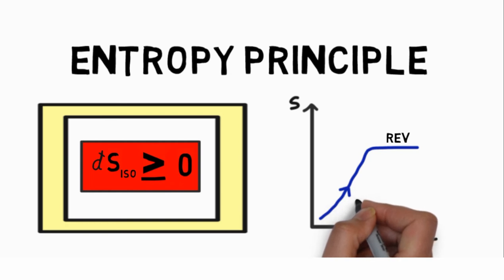The second law thus indicates the direction in which a process takes place. That is, a process occurs in such a direction as to cause an increase in the entropy of the universe.